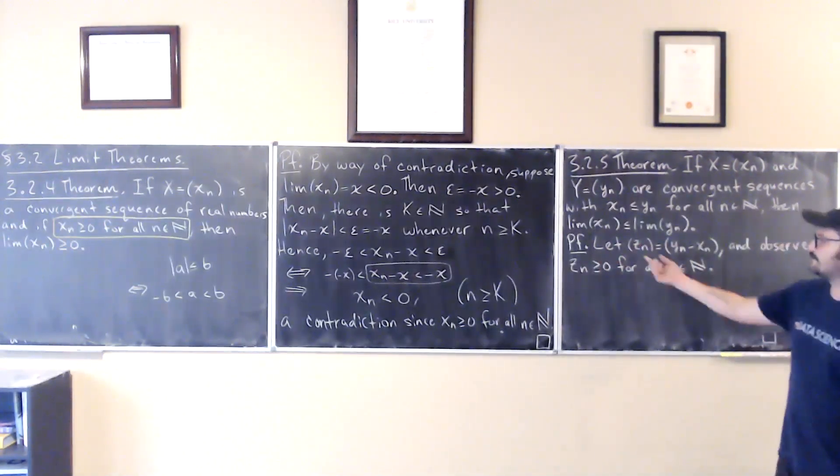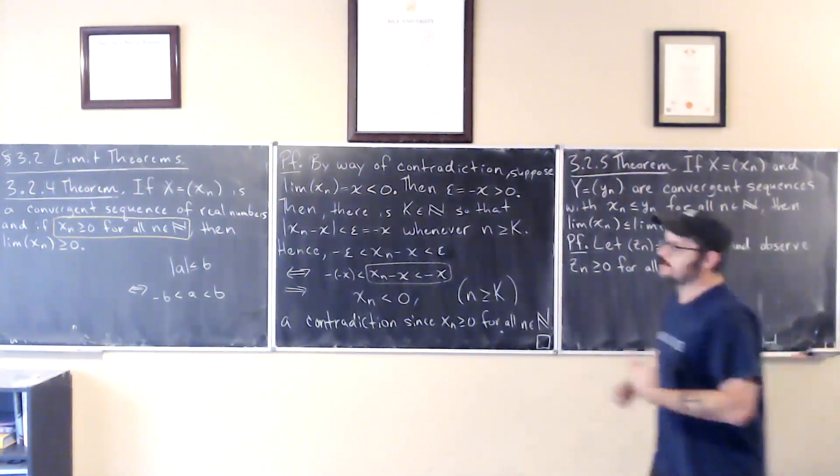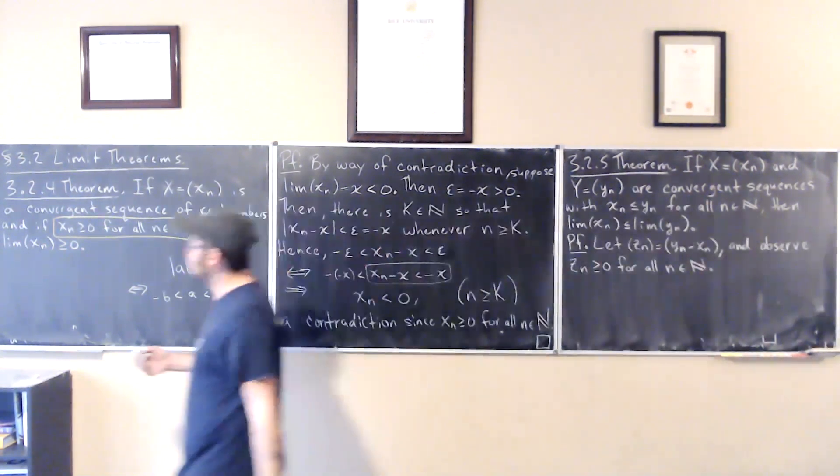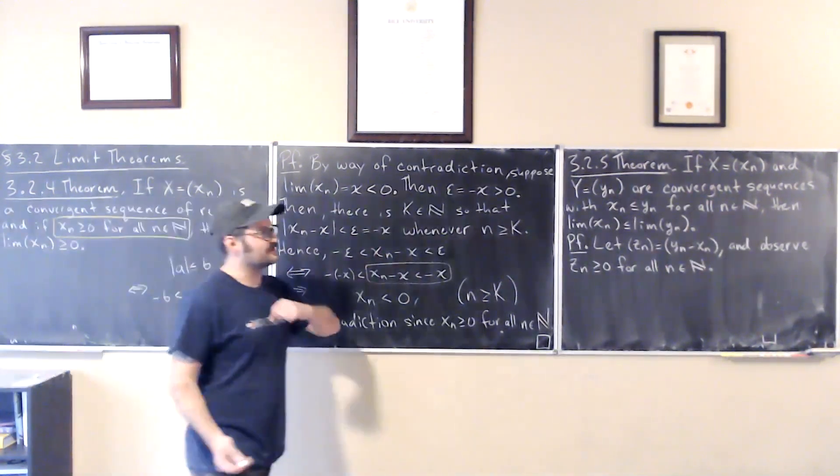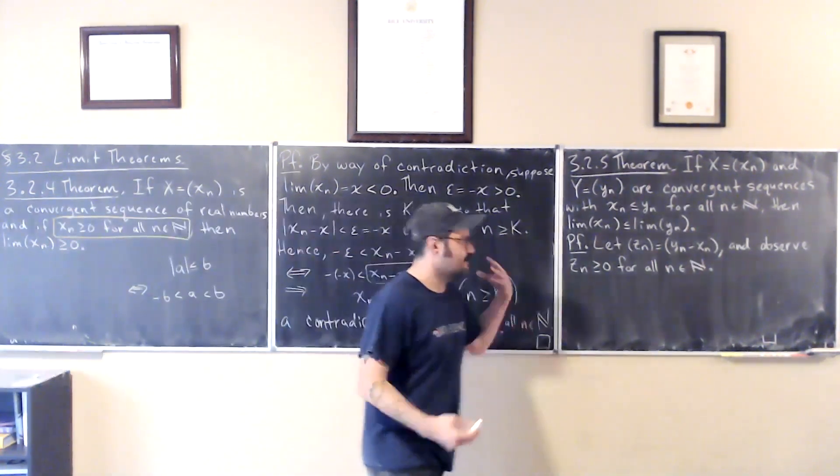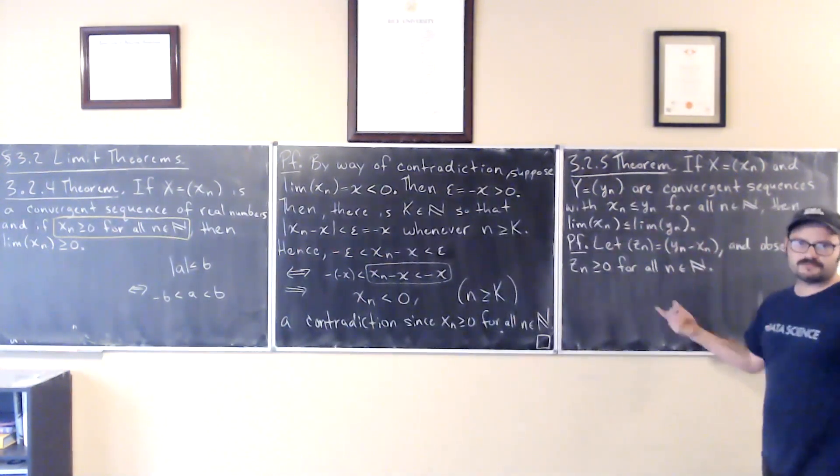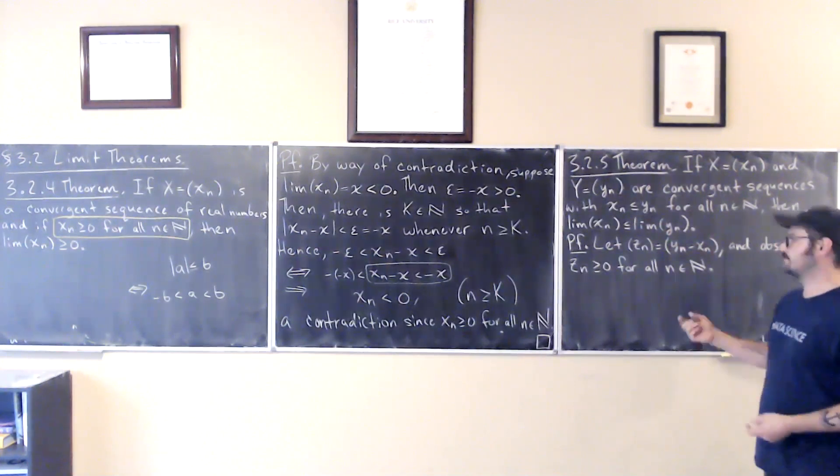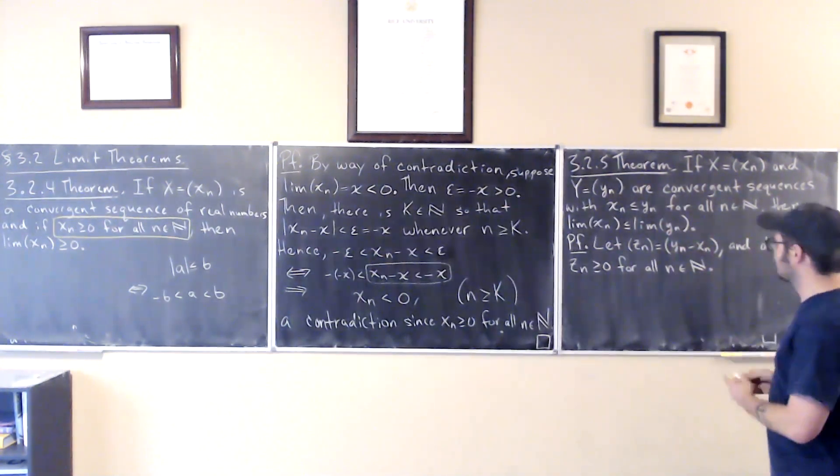Now we just need to establish that this thing actually converges. Does z_n converge? Well, by a previous theorem, maybe 3.2.3 part A, we know that if we have two convergent sequences, then the difference of the sequences does converge, and it converges to the difference of the limits.